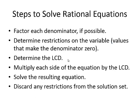To solve a rational equation, we follow these steps. We first factor each denominator, if possible, and determine any restrictions on the variable — those values that make the denominator zero.